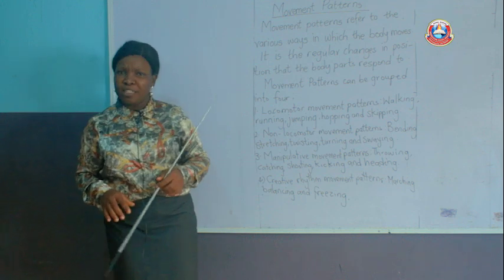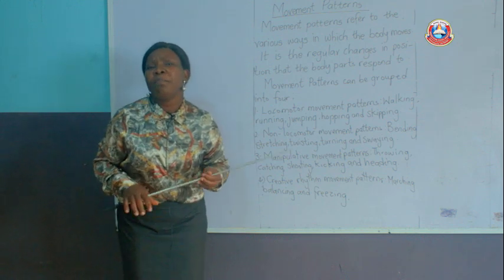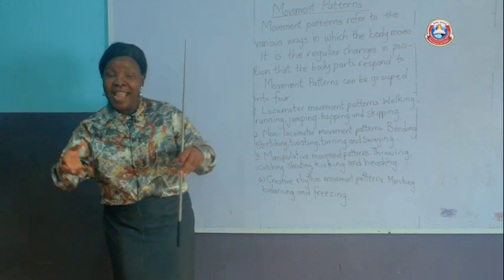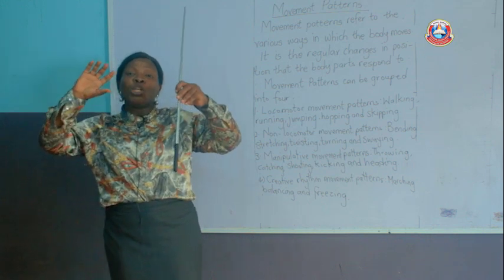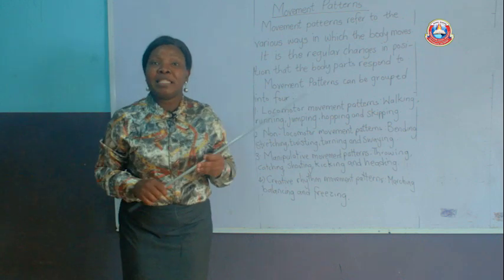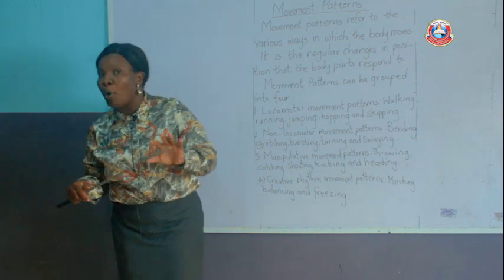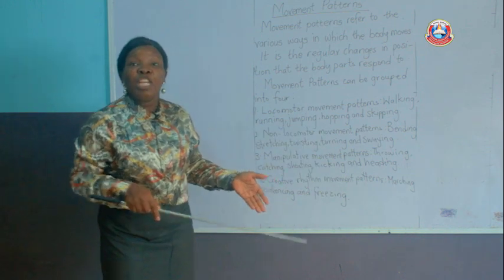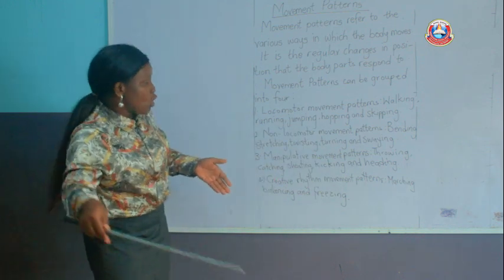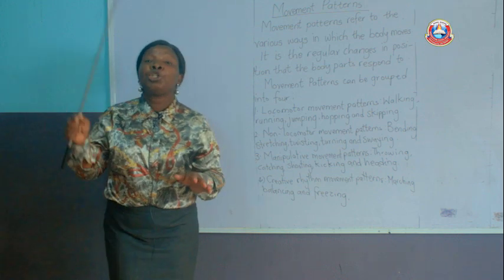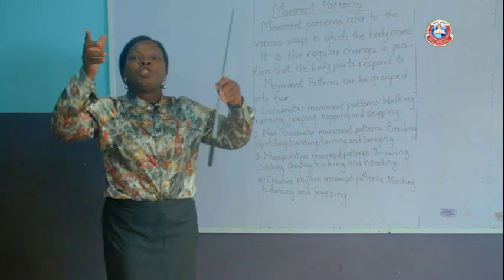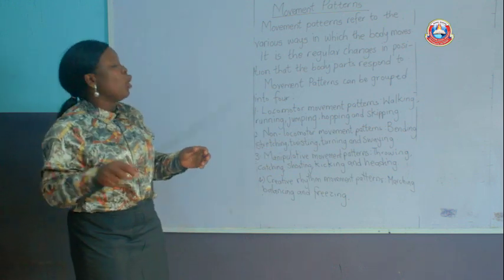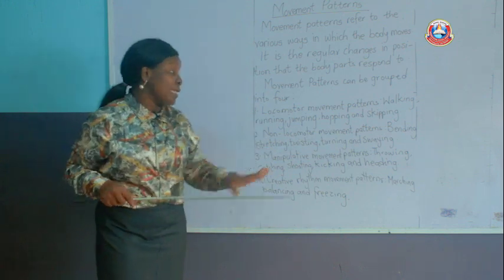How many of you have seen basketball before? They use majorly their hands to push up the ball and pass it to their playmate in order to score a goal. That process of trying to push the ball to your partner is known as shooting. It falls under manipulative movement patterns.